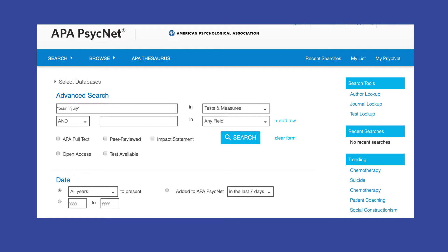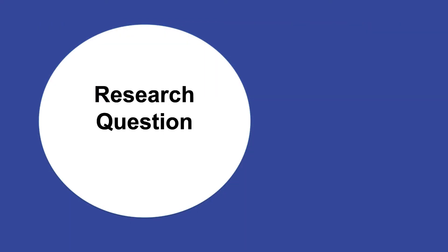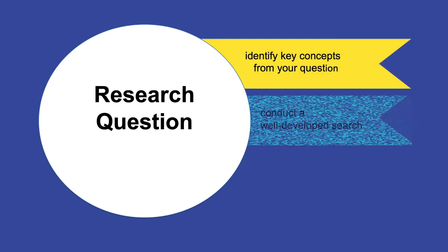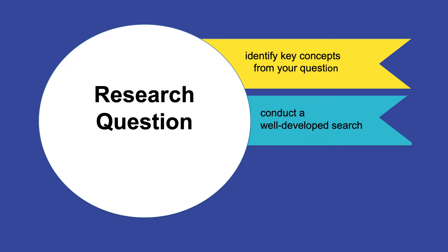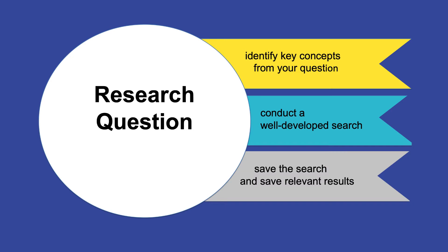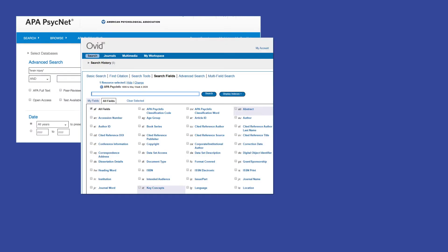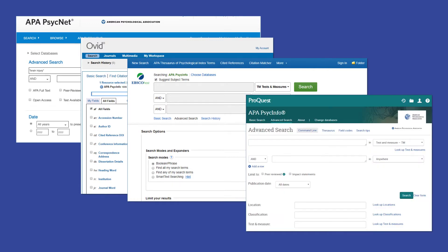Welcome. In this video, we'll walk through the steps to take in APA PsychInfo to find a selection of journal articles that will answer your research question. We'll start by looking at how to identify key concepts from your question, then talk about strategies to conduct a well-developed search, and finally save the search and relevant results for later access. While I'll use the APA PsychNet platform, the strategies discussed are appropriate for any version of APA PsychInfo.